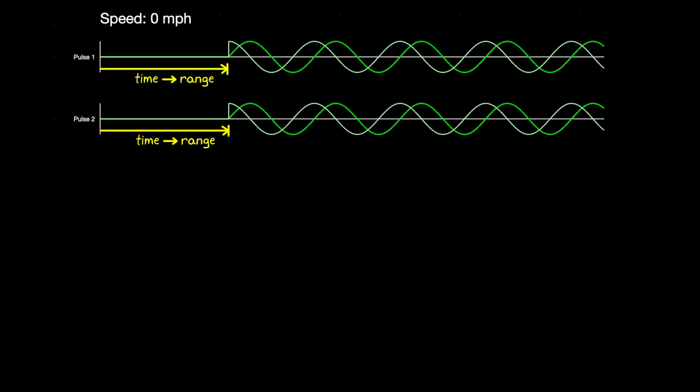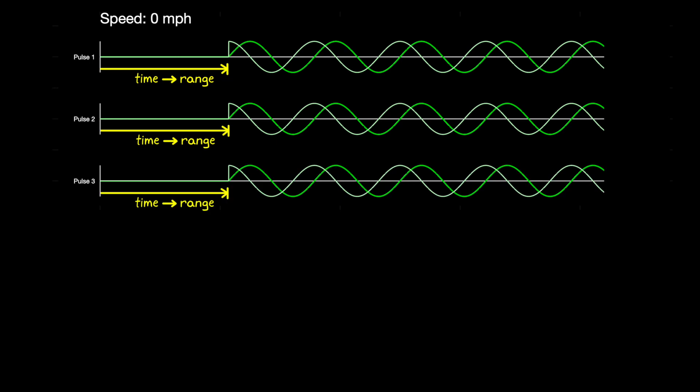So if the object isn't moving, then the range is exactly the same between two successive pulses. And if the transmit signal is coherent, then the returned pulses would also be in phase with each other. And the third pulse would be the same, and so on. Essentially, each returned pulse reflecting off of a stationary object would be identical.